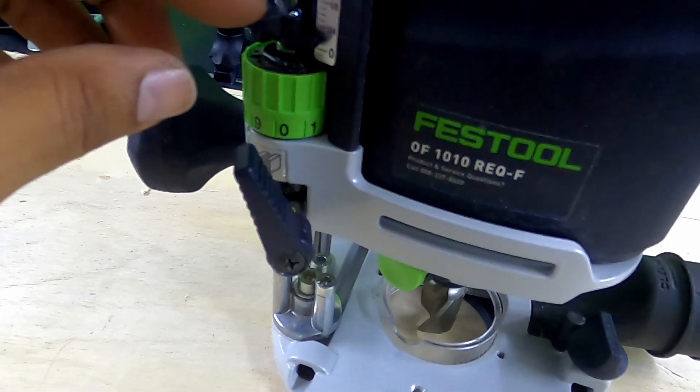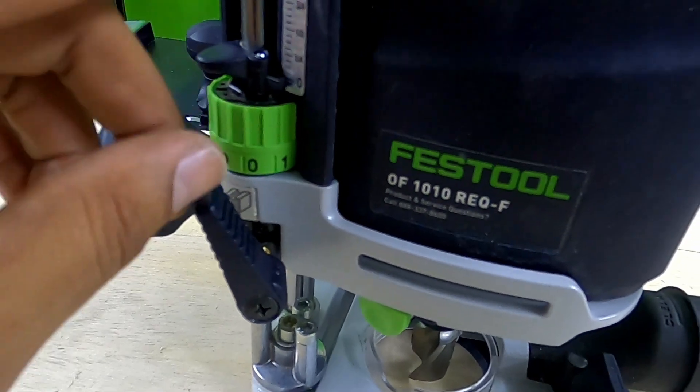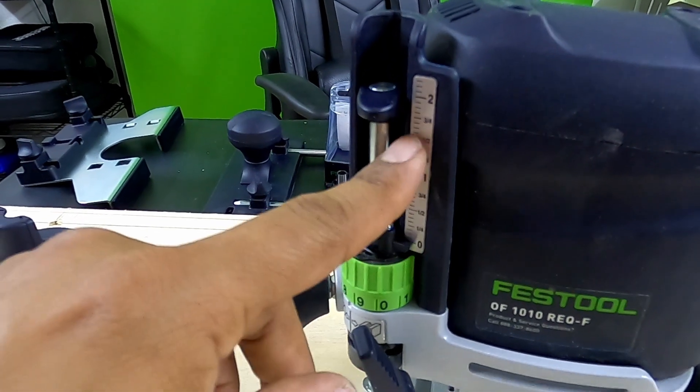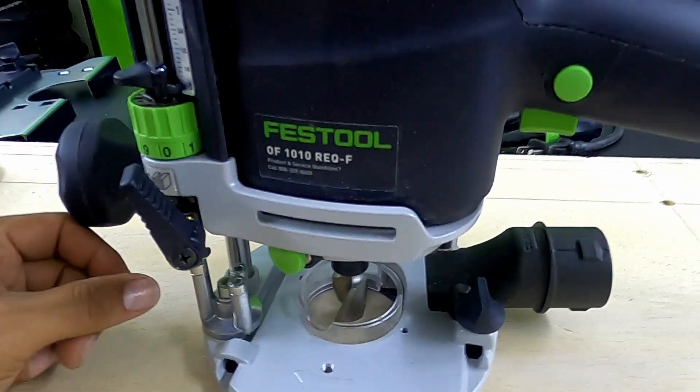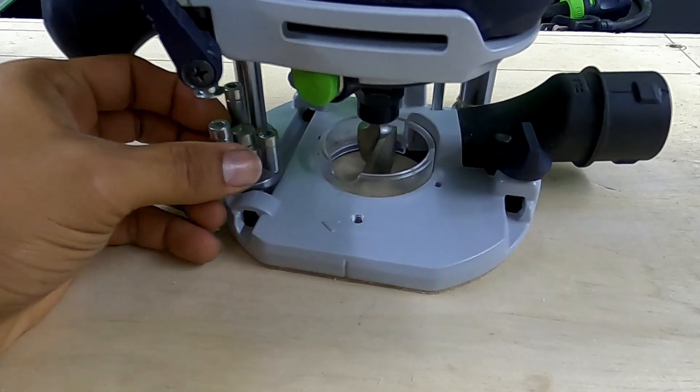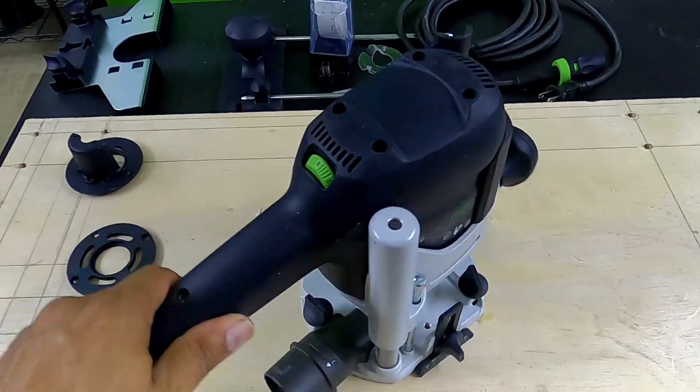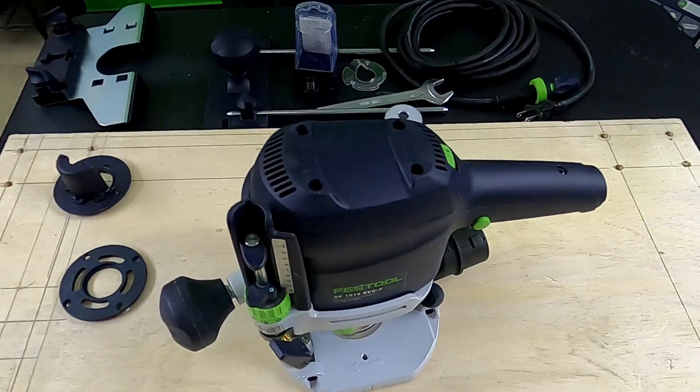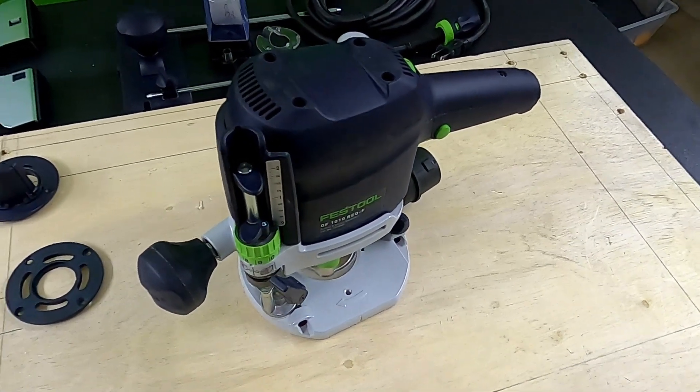This one goes to about two and a half inches as far as the actual range of depth. You've got your three little pillars to set three different depths. Good build quality. I would say it's basically exactly the same as the Festool 1400 and the 2200, just missing the ratcheting clutch and the quick release bases.